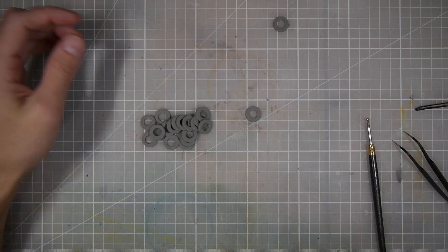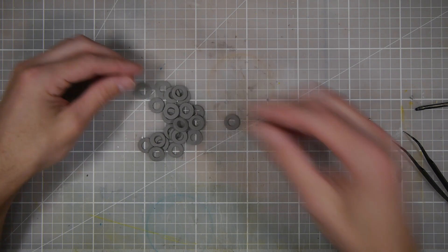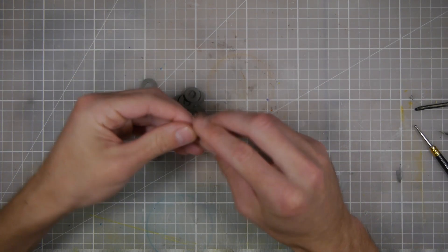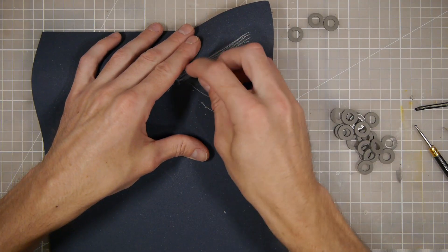Once I'd cut all the discs out I baked them so that I could start sanding all the sharp edges. It was a bit of a tedious process but if you take the time to do it right it ends up making a world of difference in the end.